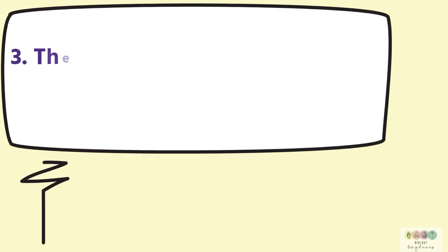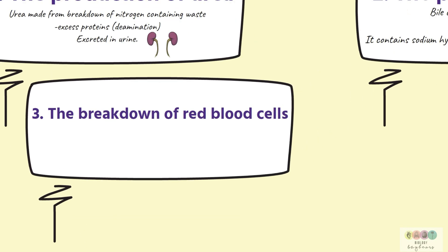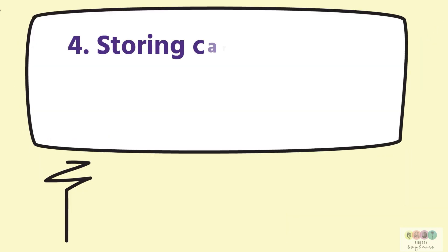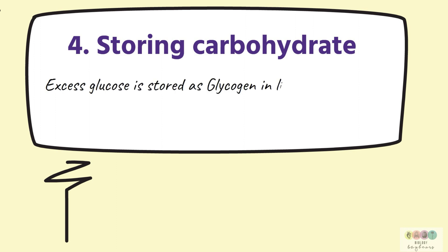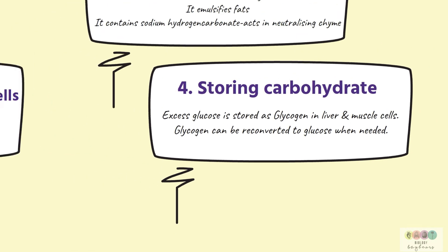Number three is the breakdown of red blood cells — old red blood cells get broken down in the liver. Number four is storing carbohydrate. Excess glucose is converted into glycogen and stored as glycogen in liver and muscle cells. Glycogen can then be reconverted back into glucose when needed.